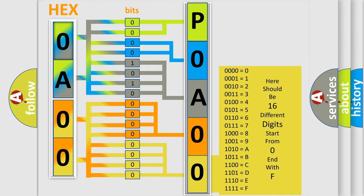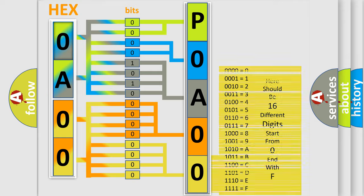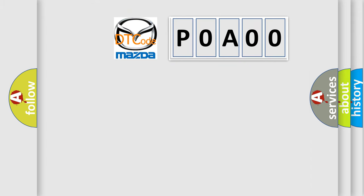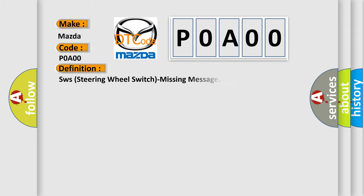We now know in what way the diagnostic tool translates the received information into a more comprehensible format. The number itself does not make sense to us if we cannot assign information about what it actually expresses. So, what does the Diagnostic Trouble Code P0A00 interpret specifically for Mazda car manufacturers? The basic definition is: SW steering wheel switch missing message.